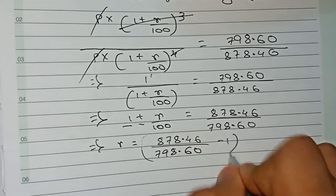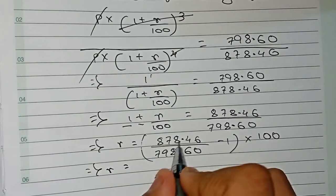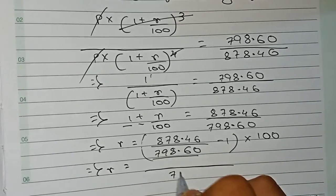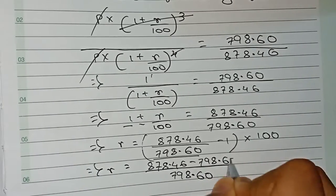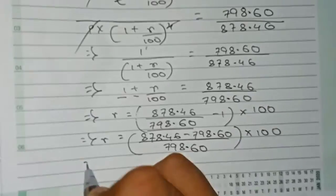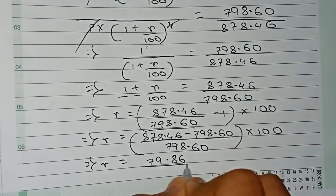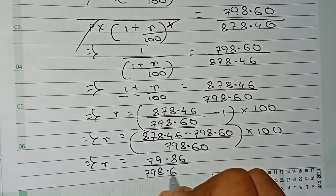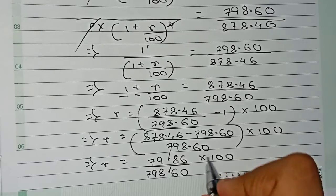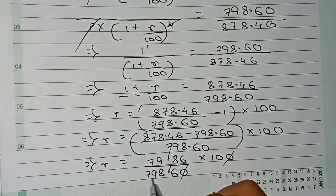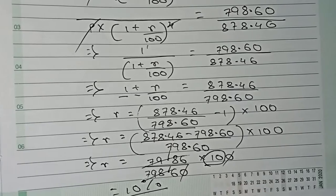So r equals (878.46 by 798.60 minus 1) into 100. This becomes r equals (878.46 minus 798.60) by 798.60, into 100, which is 79.86 by 798.60 into 100. Cancelling the decimals and simplifying 7986 by 7986, we get 10. Therefore the rate of interest is 10 percent.